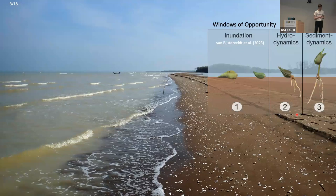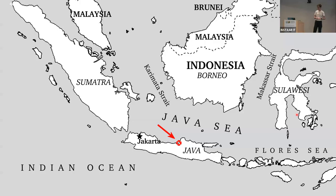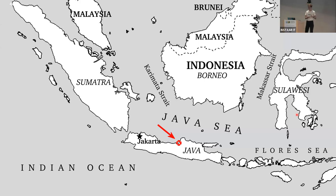We actually know very little about these cheniers — why they're there and how they move. So for this, we went to Indonesia. This is the coastline we studied, bordering the Java Sea, which is a very shallow and sheltered sea. Don't expect extreme high waves — it's really a low energy coastline.